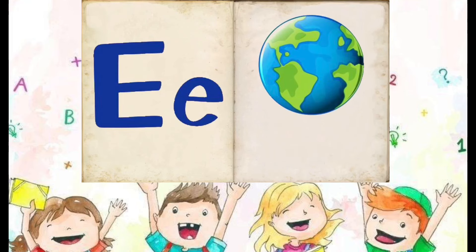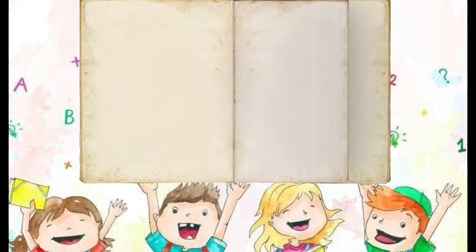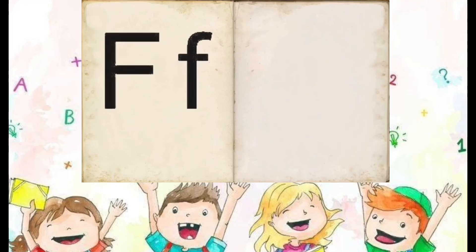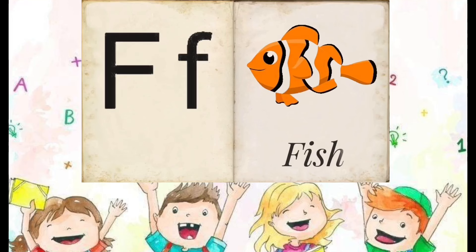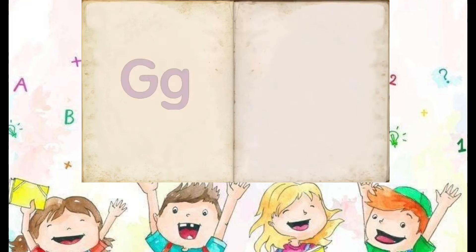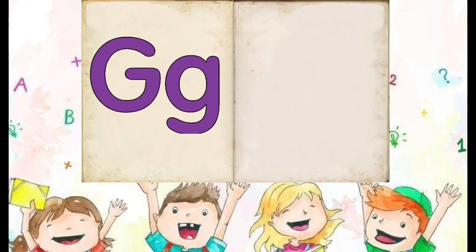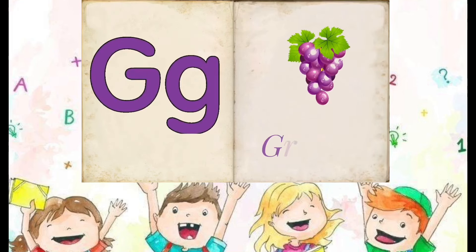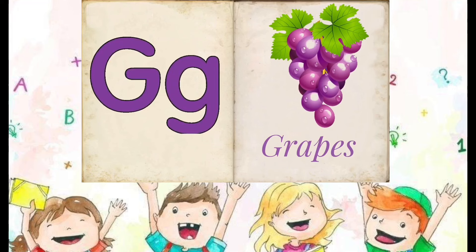E is for Earth, F is for Fish, G is for Graves.